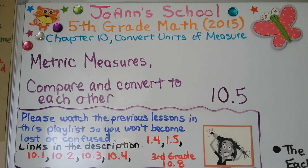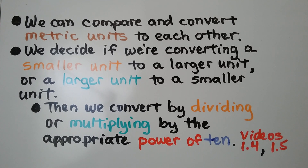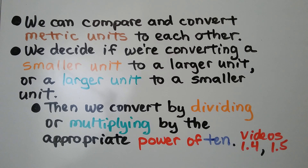Lesson 10.5: Metric Measures Compare and Convert to Each Other. We can compare and convert metric units to each other. We decide if we're converting a smaller unit to a larger unit or a larger unit to a smaller unit. Then we convert by dividing or multiplying by the appropriate power of 10.